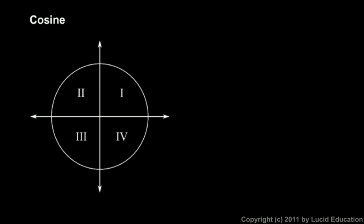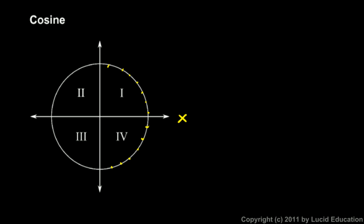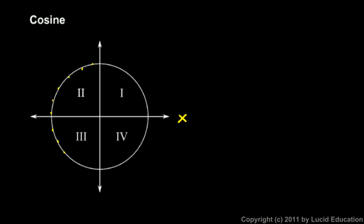We can apply similar reasoning to the cosine. The cosine of an angle is the x-coordinate, so think about the x-axis. The x-axis has positive values to the right and negative values to the left. So if we are in quadrants 1 or 4, we're in the area where x-values are positive, meaning any angle in quadrants 1 or 4 has a cosine that is positive. Likewise, all points in quadrants 2 and 3 have a negative x-coordinate, so any angle in quadrant 2 or 3 has a cosine that is negative.